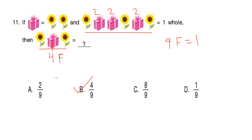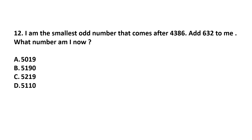Question number 12. I am the smallest odd number that comes after 4386. Add 632 to me. What number am I now? The smallest odd number after 4386 is 4387. If we add 632 to 4387, we get 5019. The correct answer is 5019, Option A.